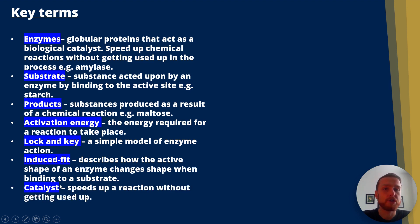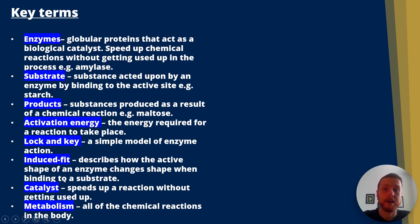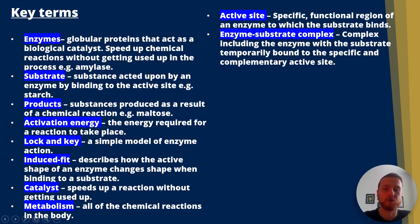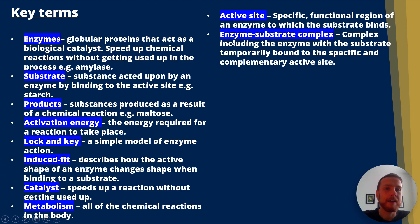A catalyst is something that speeds up a reaction without getting used up. Metabolism refers to all of the chemical reactions taking place in the body. The active site is a specific functional region of an enzyme which the substrate binds to. Enzyme-substrate complex — please, if you're answering a question on enzymes, make sure you say enzyme-substrate complex; it comes up in the AQA mark schemes all the time. This is where the enzyme and the substrate are temporarily bound and form a complementary complex.